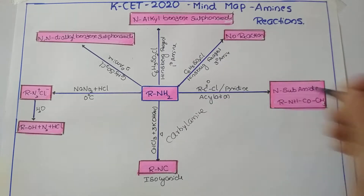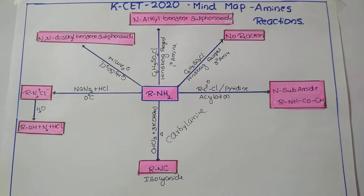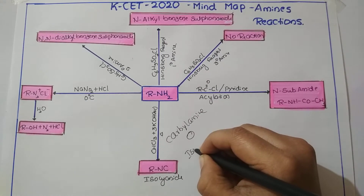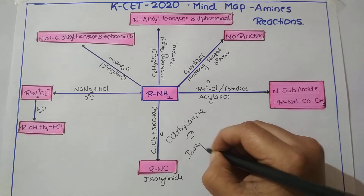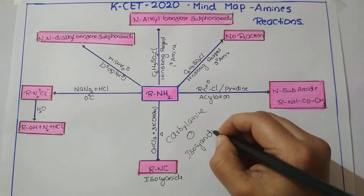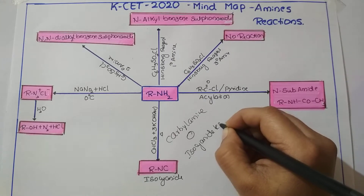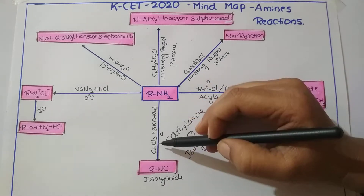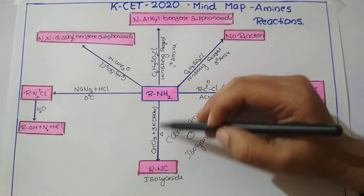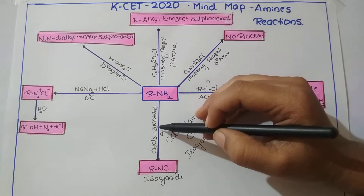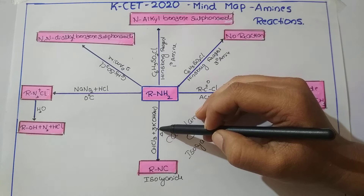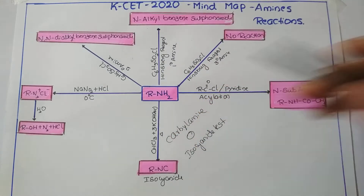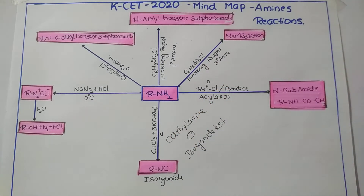This reaction can also be called the isocyanide test. Remember the reagents: chloroform with alcoholic potash — potash is potassium hydroxide. Isocyanide will be formed, and the reaction is known as the carbylamine or isocyanide test.